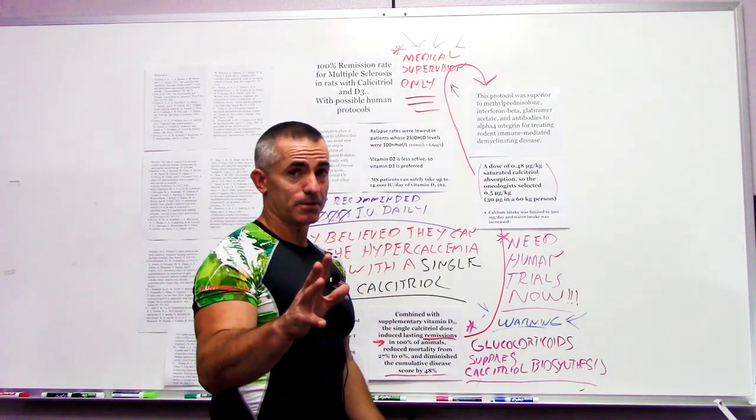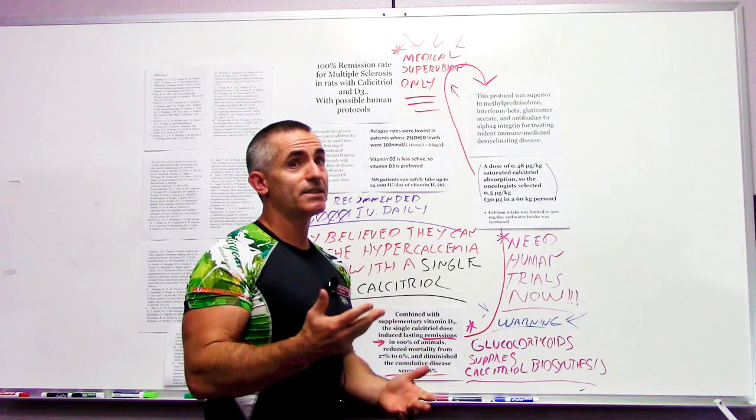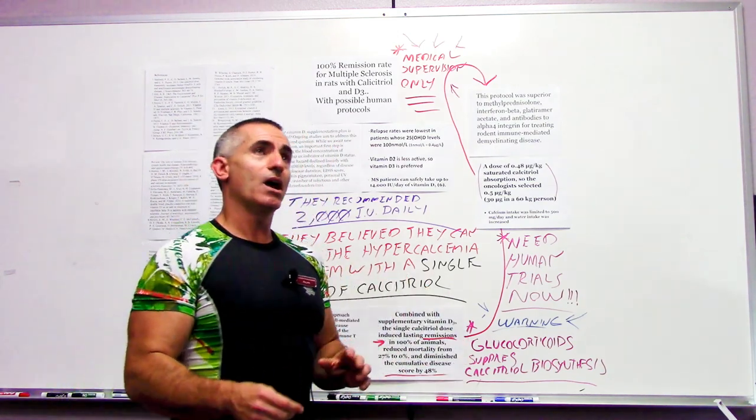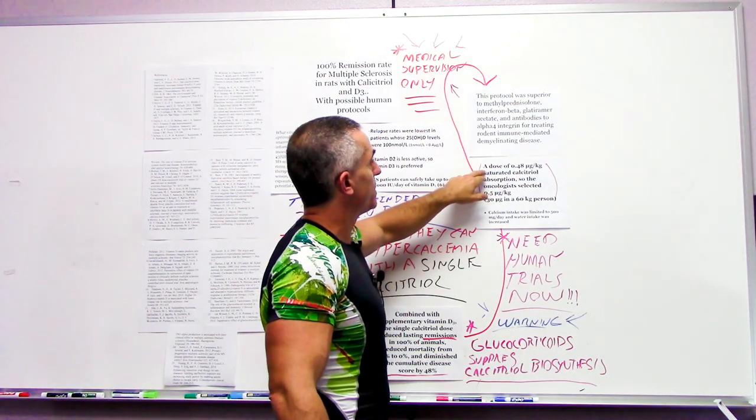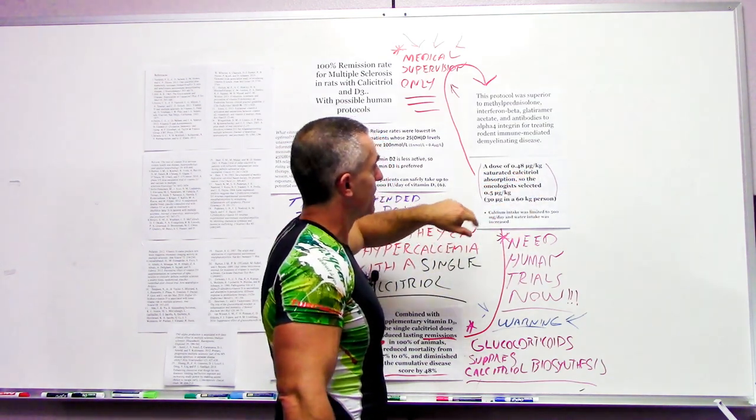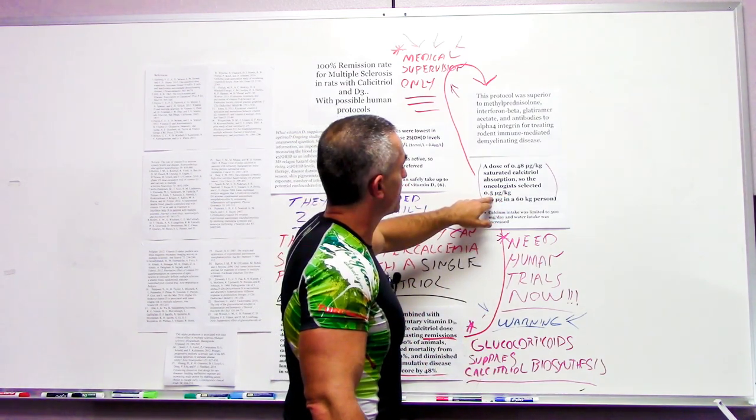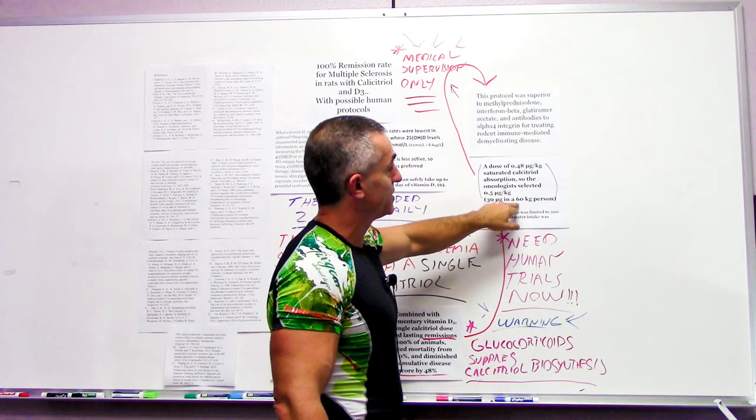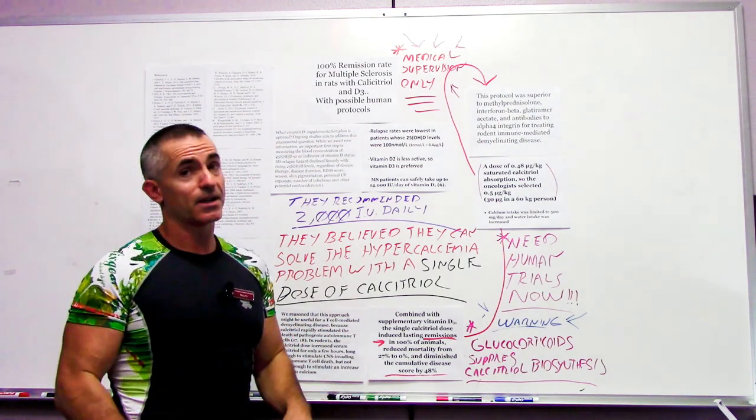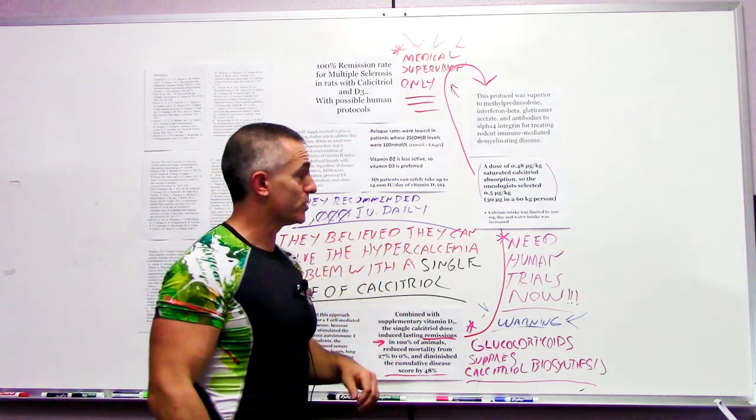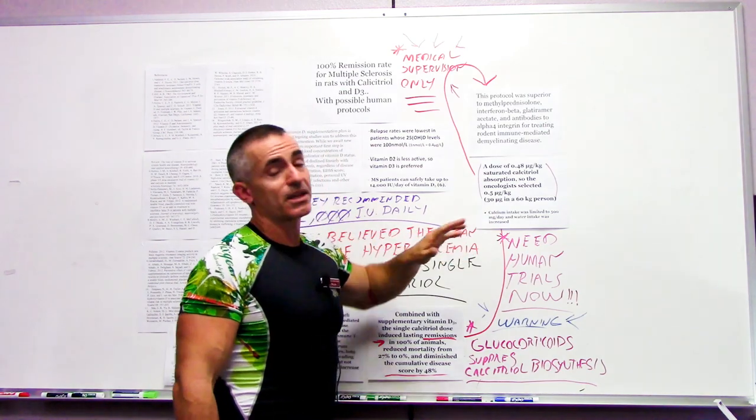As far as the amount, remember, they're trying to look for a single dose. The amount that they came across for saturating the levels was 0.48 micrograms per kilogram. The saturated calcitriol absorption, the oncologists in prior studies selected basically half a microgram per kilogram or 30 micrograms in a 60 kilogram person. At the same time too, they really limited the calcium intake. In this case, when they did the prior human studies on calcitriol, which was not conducted in this animal study, they found out they really had to keep the calcium levels low.